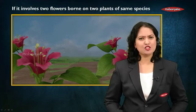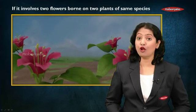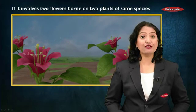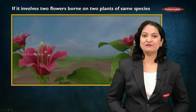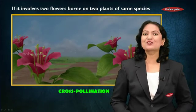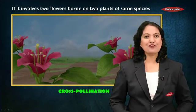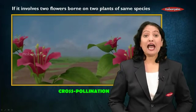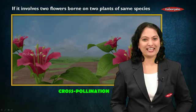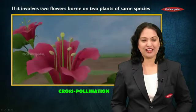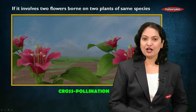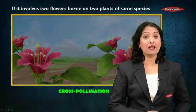Plants of the same species are present in large numbers in the same area, so sometimes pollination involves two flowers born on two different plants but of the same species. If such a thing happens, it is called as cross-pollination. In cross-pollination, the anthers of one flower transfer their pollen grains to the stigma of another flower which is on a totally different plant but of the same species.